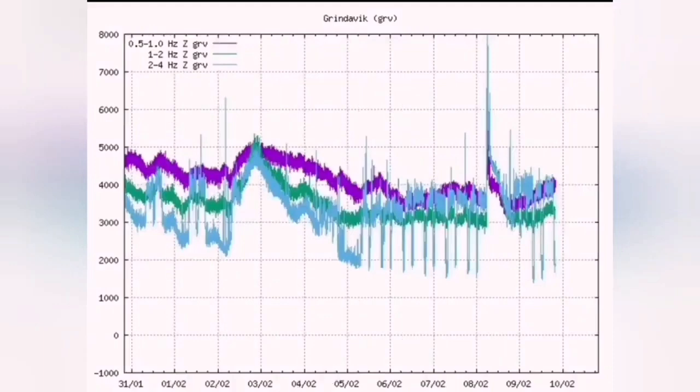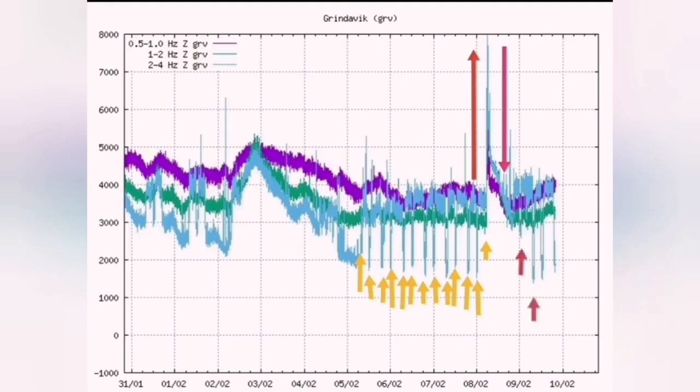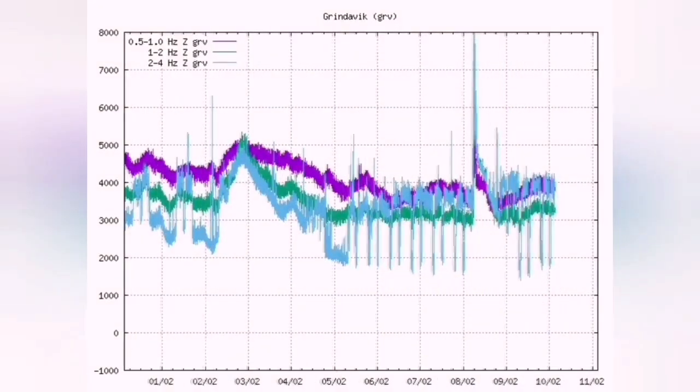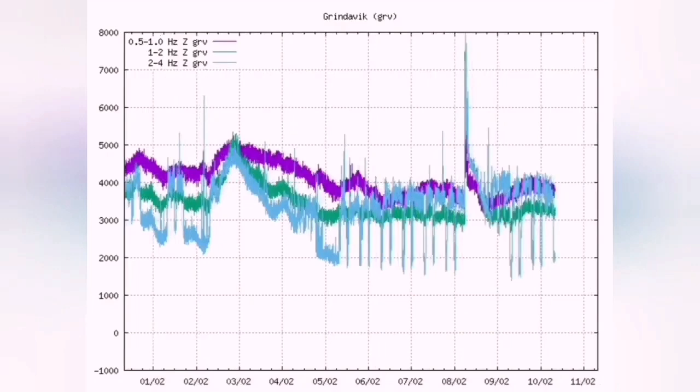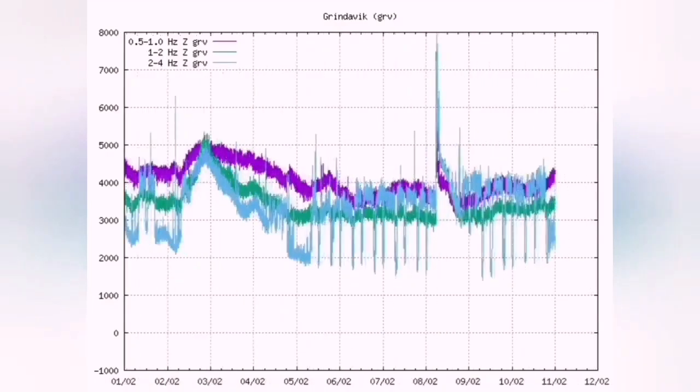On the chart you see a sudden rise in the tremors. That was December 23rd, this is January, and this is a February eruption. As you can see, you have a sudden rise in the tremors which shows the eruption has started.